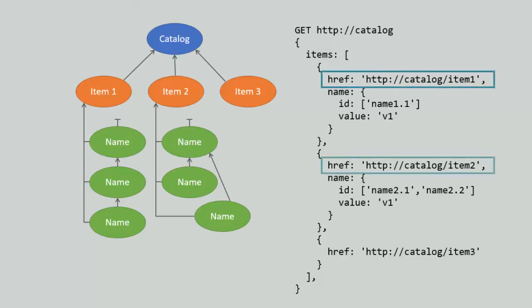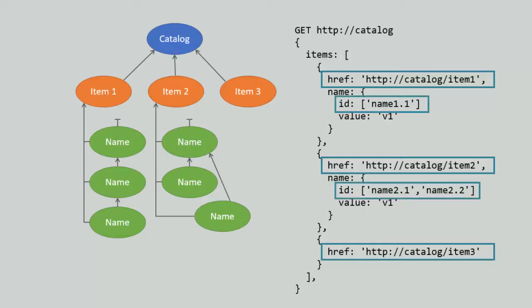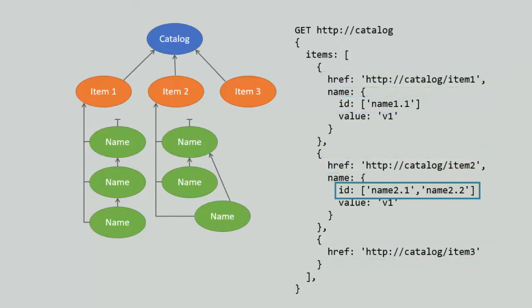That representation includes a URL for each of the successors and version information about each of those different mutable properties. So, we know which version is the candidate, which version is current. In the case of mutable properties that have multiple candidates, we get both of those candidates and both of their version numbers. So, that's what a GET looks like in a historical system.